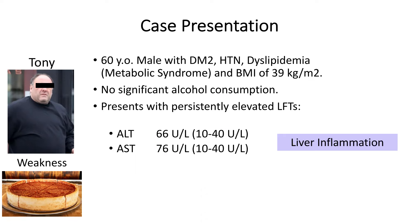His body mass index is 39, and obesity is defined as a BMI above 30. He does not consume a large amount of alcohol, and he presents to our clinic because of elevated liver function tests — called ALT and AST. These are liver enzymes that increase when you have any chronic liver disease and indicate liver inflammation. His ALT was 66 and his AST was 76; normal is less than 40 for both. This is the most common presentation we see for suspected fatty liver disease: someone with obesity and type 2 diabetes coming in with elevated liver enzymes.